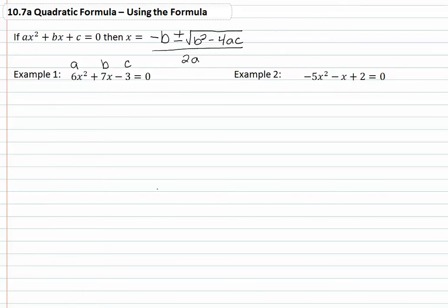Putting it into our formula, we have the opposite of 7, which would be -7, plus or minus the square root of 7² - 4(6)(-3). And this will be all over 2(6).